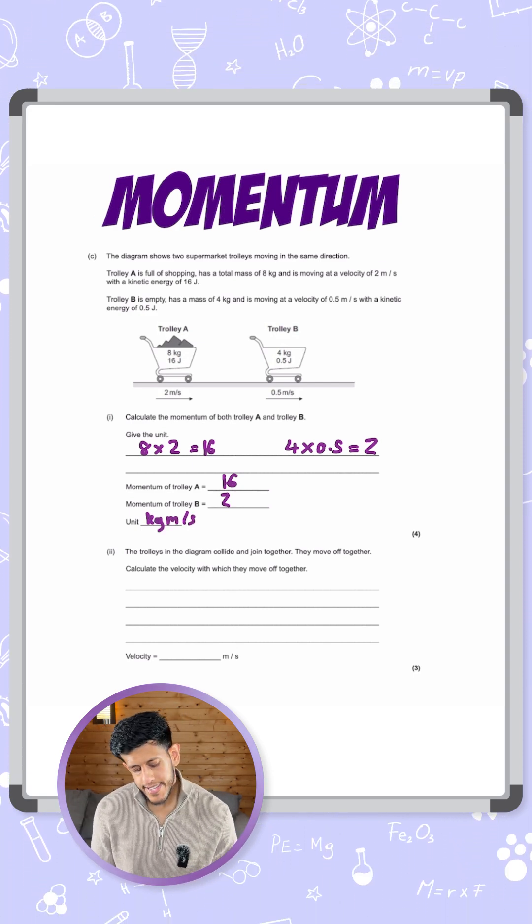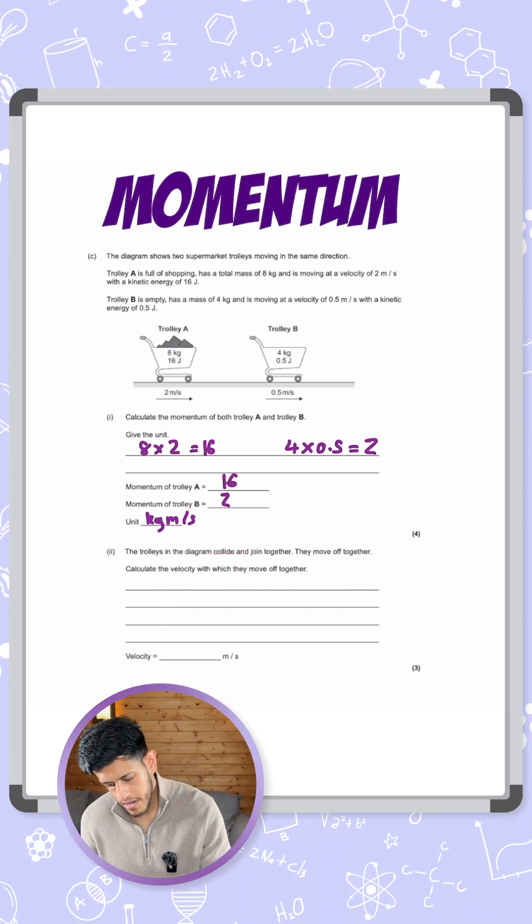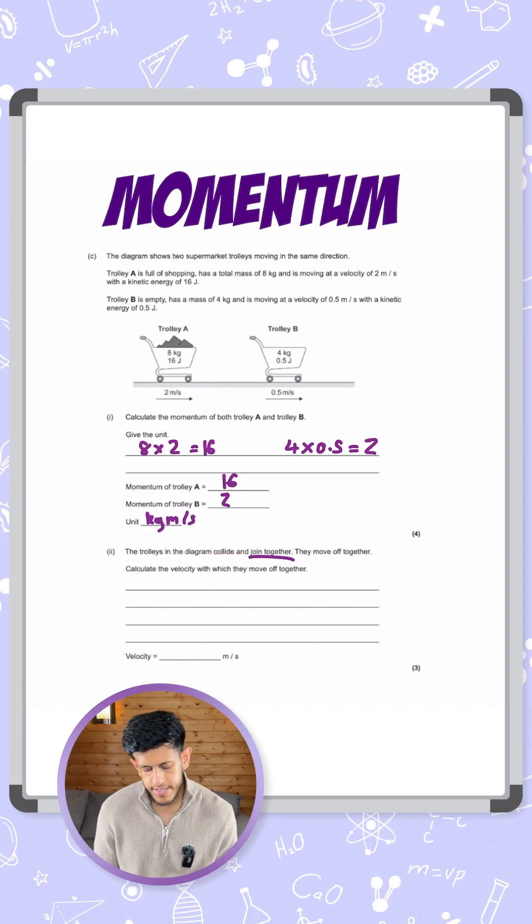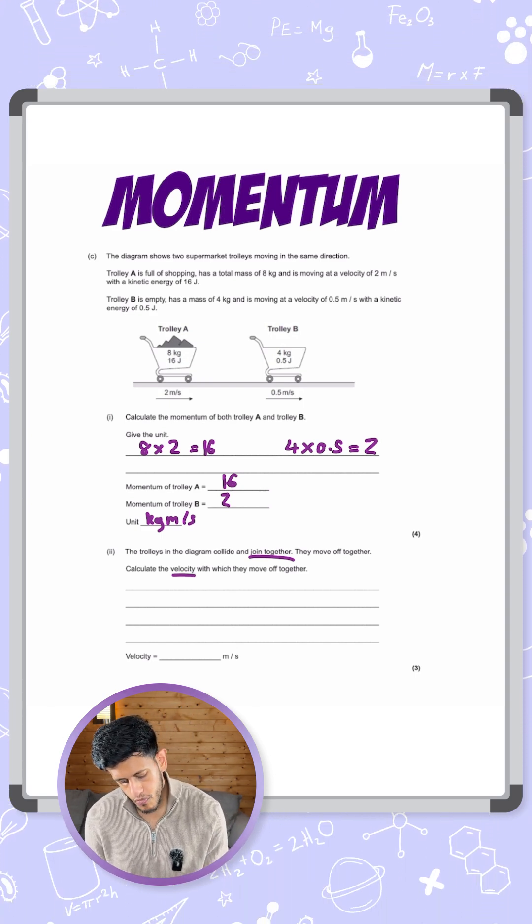Let's look at the second question. It says the trolleys in the diagram collide and join together. I'm going to underline specifically join together, and it says they move off together as well. Calculate the velocity with which they move off together.